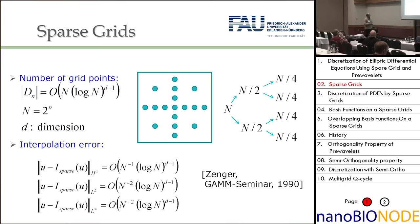The interesting property of sparse grids is that the number of unknowns does not increase in such a dramatic way. With d dimensions we only have n times (log n)^(d-1) grid points. The reason is the structure: in the middle of the domain you have only n points, then n/2 in the upper and lower half recursively, giving a logarithmic term in each dimension.